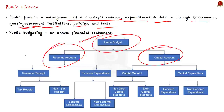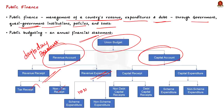The revenue account covers the day-to-day business of the government, classified into revenue receipts and revenue expenditure. Revenue receipts include daily income such as income tax, excise duties, interest, dividends, profits, and grant-in-aid. Revenue expenditure covers day-to-day needs like pensions, salary payments, interest payments, and grants-in-aid to states — expenditure that will not yield any revenue in the future.